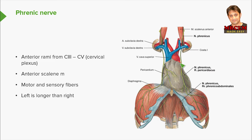The left phrenic nerve is longer than the right. Looking at the diaphragm, the right dome is more elevated than the left dome, so the left dome sits a little lower. Hence the left phrenic has a slightly longer course to reach its destination.